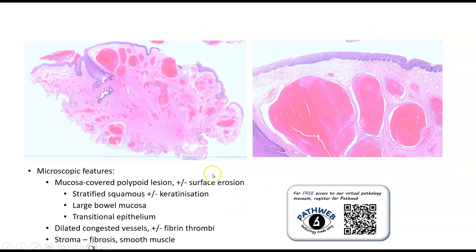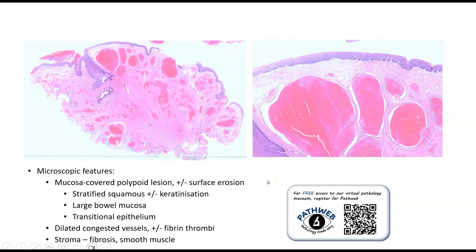On microscopic examination, we can see this polypoid lesion that is covered either by large bowel-type mucosa, stratified squamous mucosa, or sometimes transitional-type epithelium. Below this mucosa, we have dilated, congested vascular spaces filled with blood and sometimes with fibrin thrombi. The intervening stroma contains fibrous tissue as well as sometimes smooth muscle bundles.